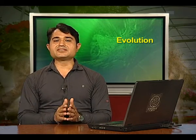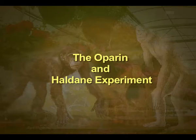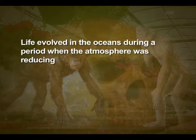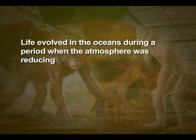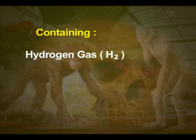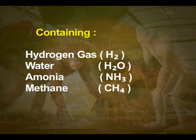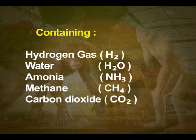Dear students, today we will describe in detail the Oparin and Haldane experiment. According to their theory, life evolved in the oceans during a period when the atmosphere was reducing, containing hydrogen gas, water, ammonia, methane and carbon dioxide.